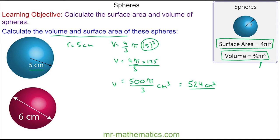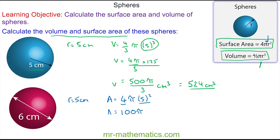To work out the surface area of the same sphere, again the radius is 5 centimeters. So we have the area is 4 multiplied by π multiplied by 5 squared. 5 squared is 25, and 25 multiplied by 4 is 100. So the surface area is 100π centimeters squared, or approximately 314 centimeters squared to three significant figures.